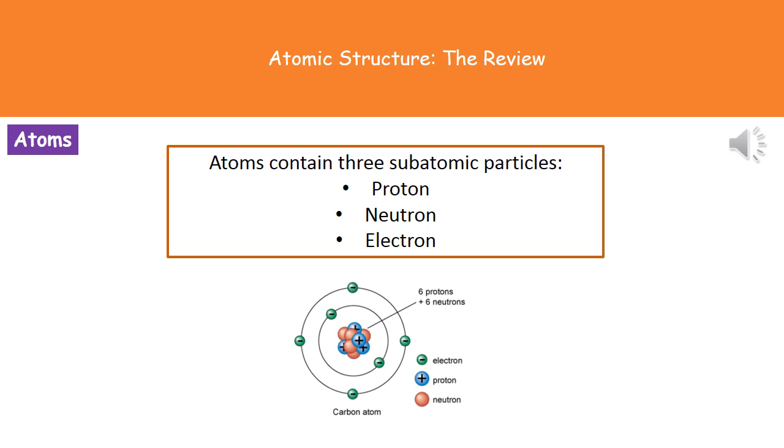If we look at the diagram at the bottom there, we can see how they're actually arranged. In the center, what we have is a structure called the nucleus, and that is made up of our neutrons and the protons. Around the outside of that, we've got these little shells or layers, and they contain our electrons.